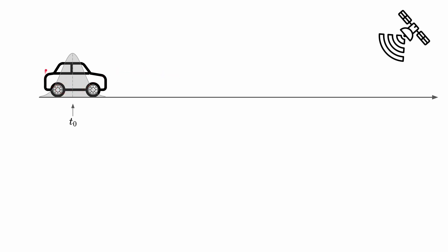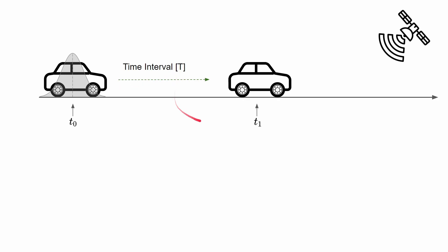Here we can see the vehicle — this is the actual vehicle, the ground truth. Here we have the initial position that we assume we already know, let's say the zero position. With this zero position we have some kind of uncertainty, which we can initialize based on our knowledge of the initial position. Then after a time interval T, the actual vehicle moves to this new position, and during this time interval we can do several prediction steps from the Kalman Filter.